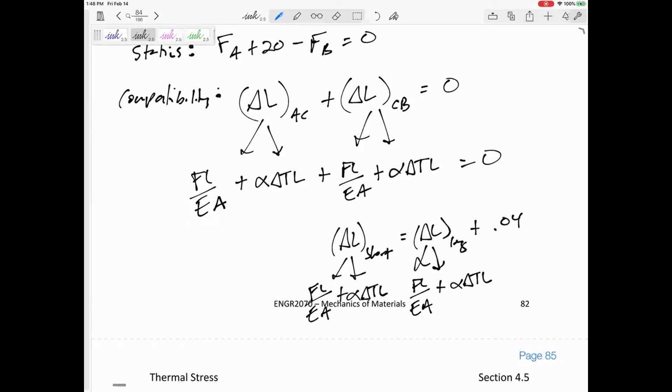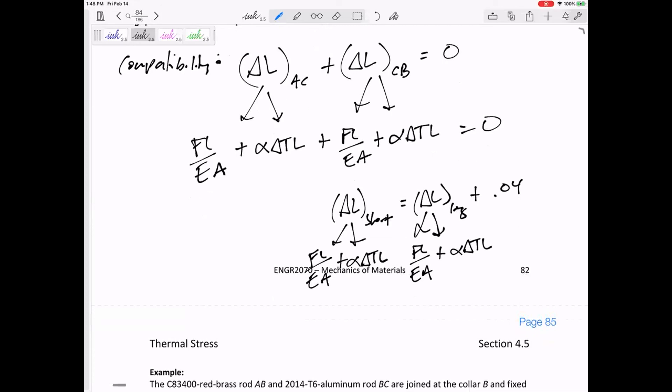Now we've got to be very careful. For FL over EA, positive is tension. For alpha delta TL, positive is an increase in temperature. Just be careful, because sometimes you might have, like, maybe the temperature is rising right here, but be careful—this one was maybe in compression. So you might have like a negative here, a positive here, a negative here, a positive here. Just be careful. We're not re-learning everything. We're not scrapping what we've been doing. We're adding a little wrinkle—alpha delta TL into our equations.